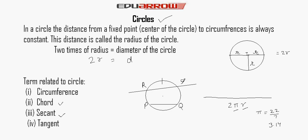Now we read about tangent. A tangent is a line that touches the circle at its outer circumference at exactly one point. This is the tangent of the circle and it touches at the point L.